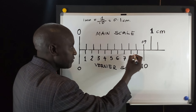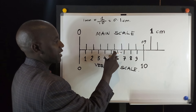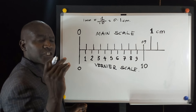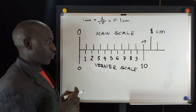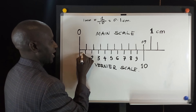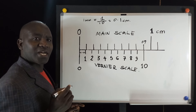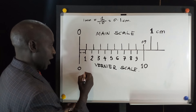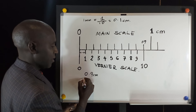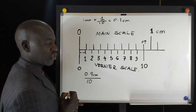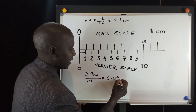Look at the spaces: one, two, three, four, five, six, seven, eight, nine, ten — ten divisions in a distance of 0.9 centimeters. So the question is: what is the length of one small division? I need to divide 0.9 centimeters by ten divisions, and I get 0.09 centimeters.